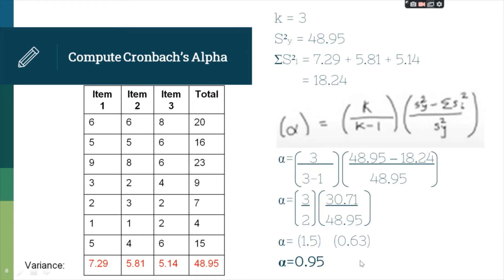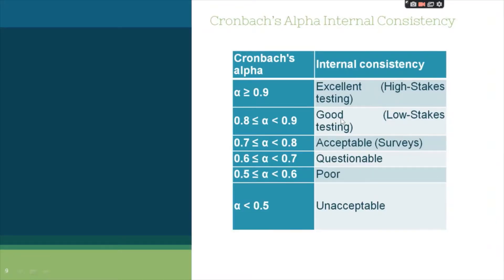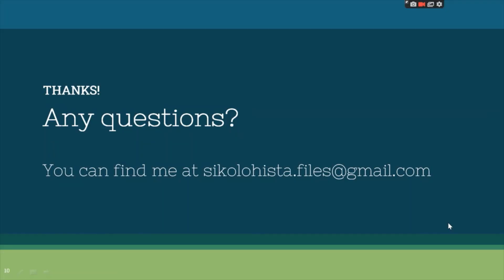How do we interpret Cronbach's alpha? Our result of 0.95 is greater than 0.9, which means the Cronbach's alpha of our items is excellent — suitable for high-stakes testing. If it is between 0.8 and 0.9 it is good; 0.7 to 0.8 is acceptable; 0.6 to 0.7 is questionable; 0.5 to 0.6 is poor; and less than 0.5 is unacceptable. That's all — thank you. If you have any questions, just send me a message.